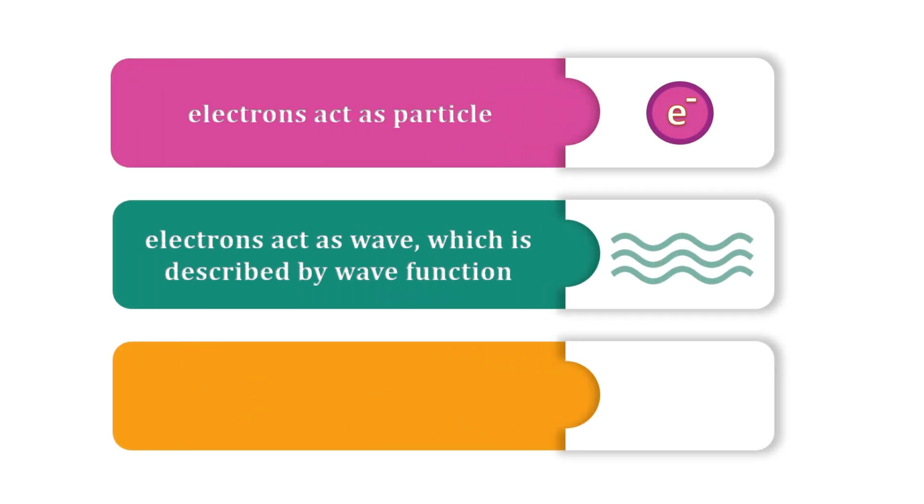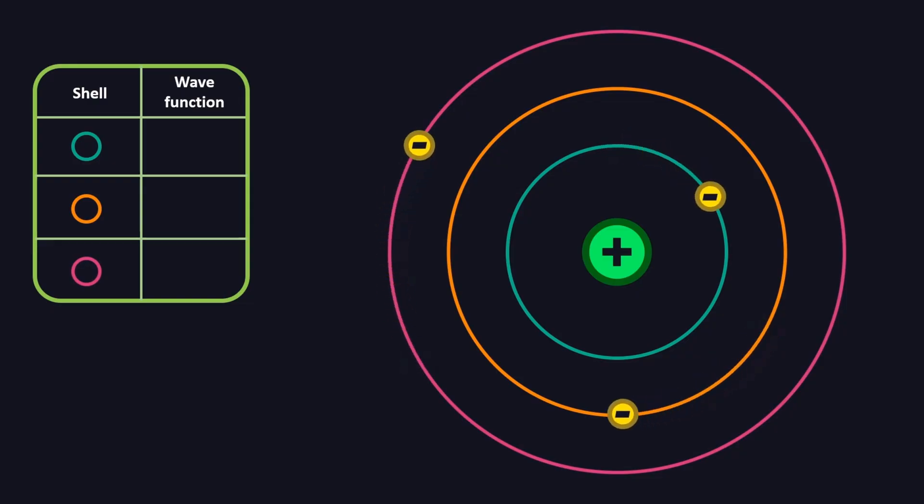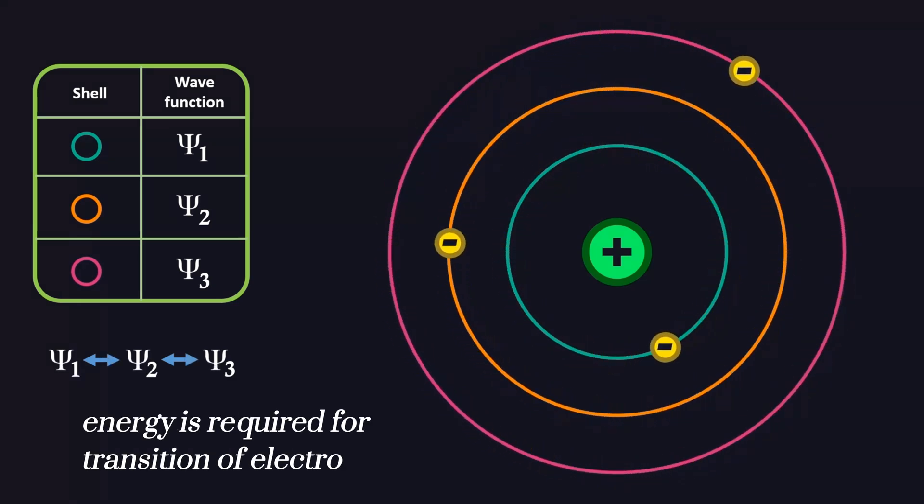Electrons aren't just tiny particles. They are also waves, described by something called a wave function. In simple terms, wave functions define the probability of where an electron can be found in certain positions or states. It is represented by the symbol psi. Each orbit corresponds to a specific wave pattern, and jumping between orbits means completely changing that pattern. This takes energy and follows strict quantum rules.